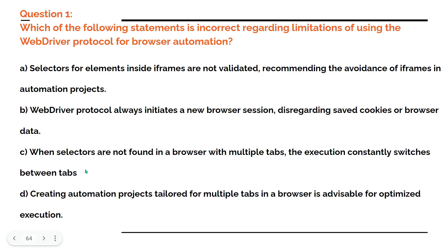Option D: creating automation projects tailored for multiple tabs in a browser is advisable for optimized execution. Do you advise multiple tabs when you want to go for WebDriver browser automation? Tell me which is the right answer out of these — comment your answer.